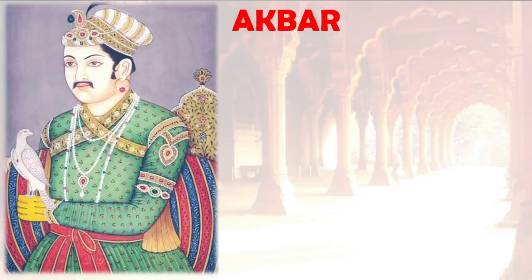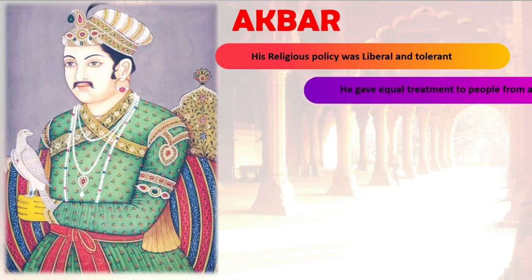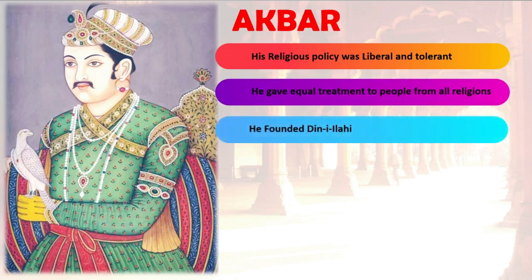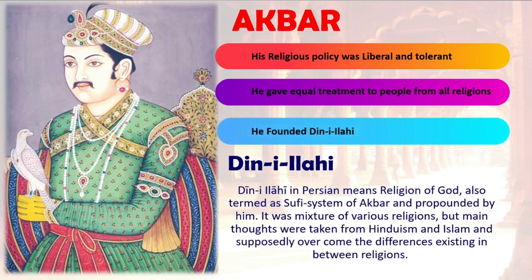Akbar was a knowledgeable and vigilant ruler. His religious policy was liberal and tolerant. He gave equal treatment to people from all religions. He founded Din-e-Ilahi by incorporating noble principles from all religions, but never compelled anyone to adopt it. Din-e-Ilahi was a new religion formed by Akbar. It was a mixture of various religions, but the main thoughts were taken from Hinduism and Islam.